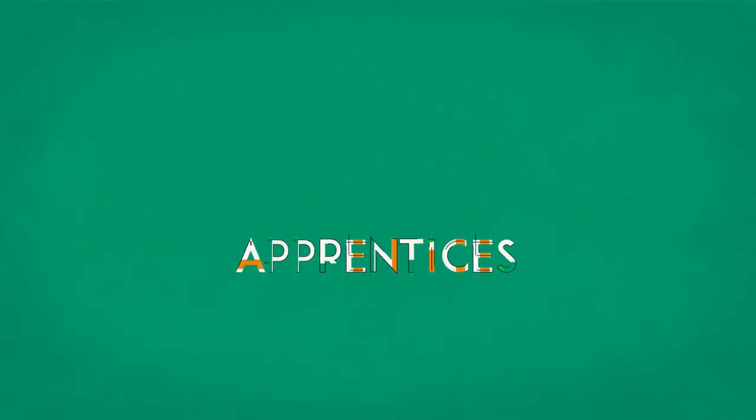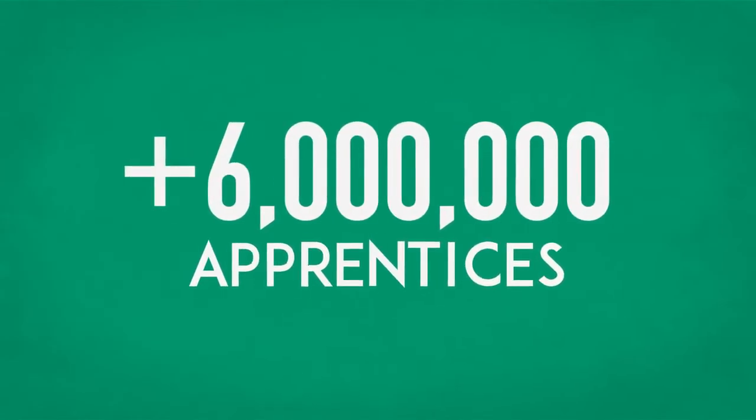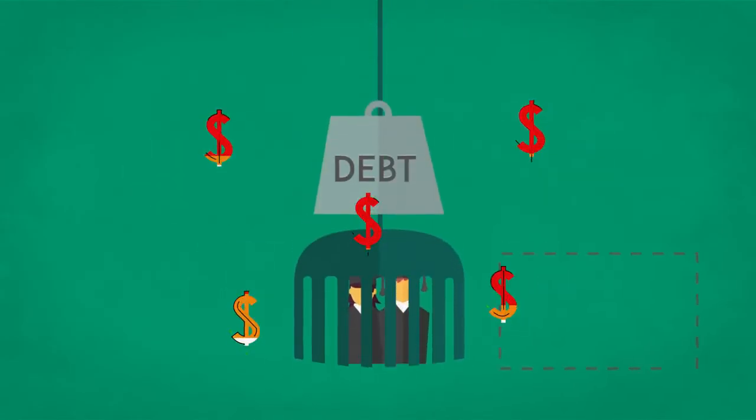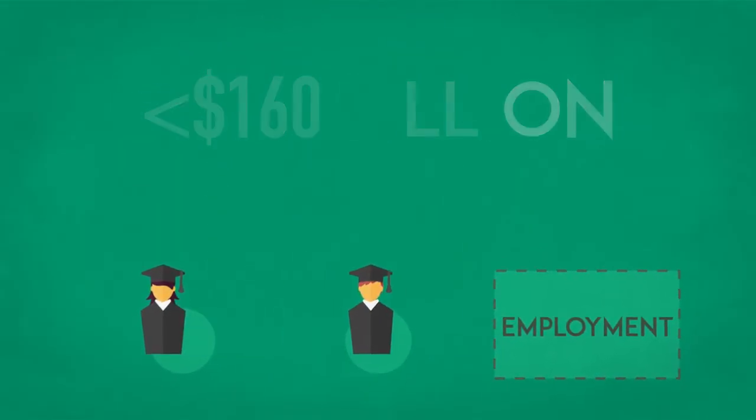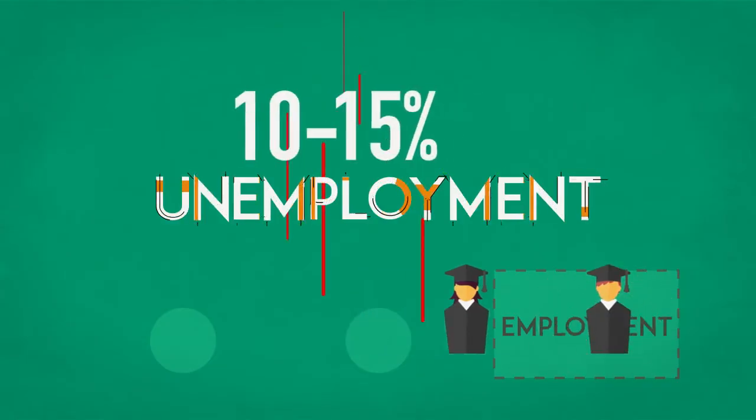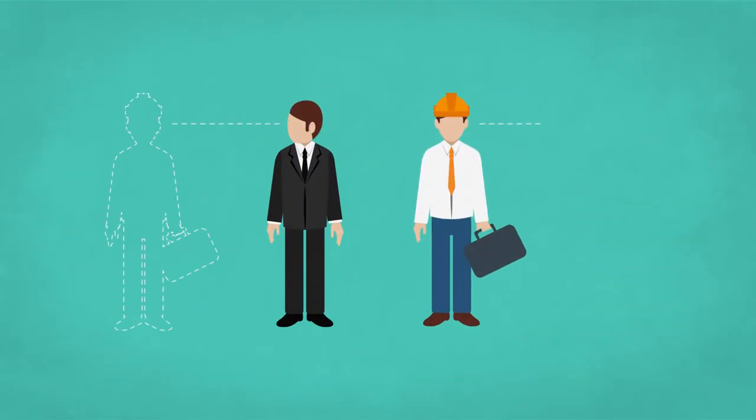Instead of its current 445,000 apprentices, the US would have more than 6 million. Student debt would be reduced by almost $160 billion per year, and the youth unemployment rate would fall from a current 10 to 15 percent to 3 percent. The mismatch between what employers are looking for and what they find in the job market would be erased.